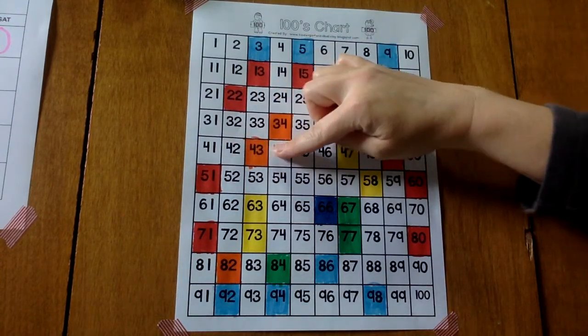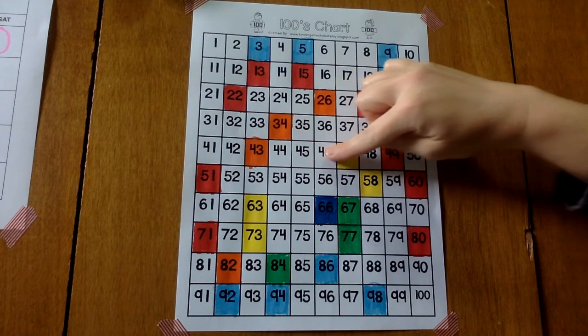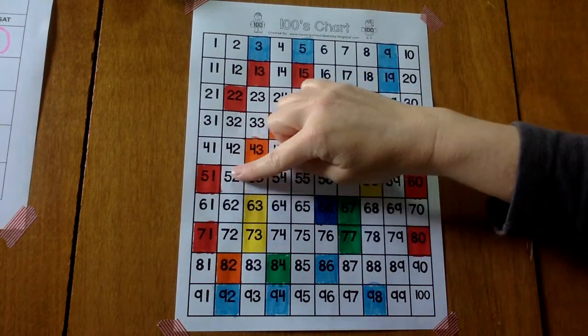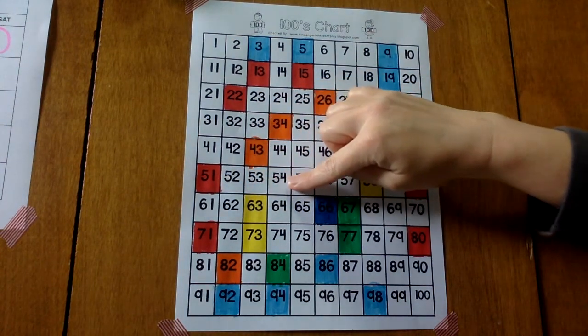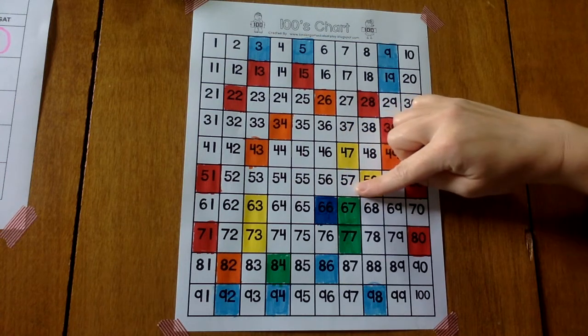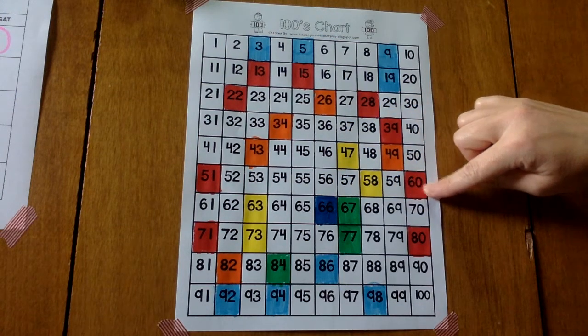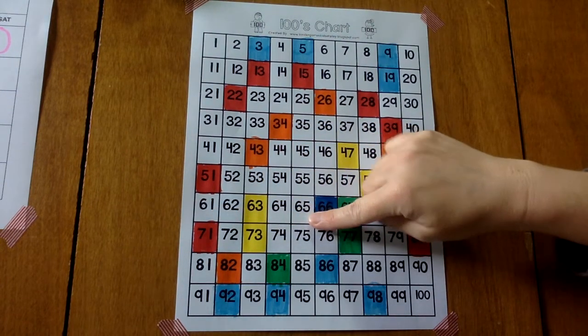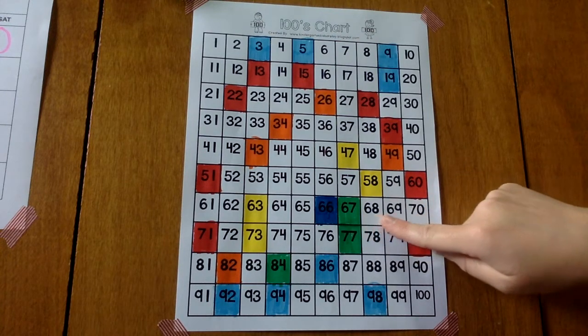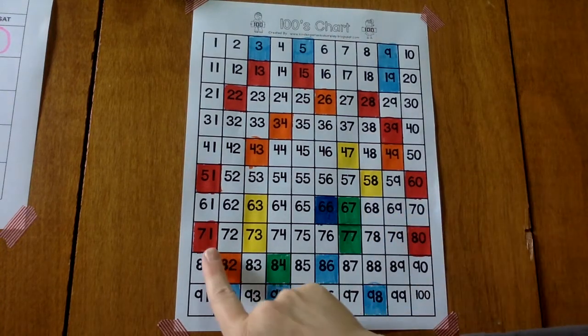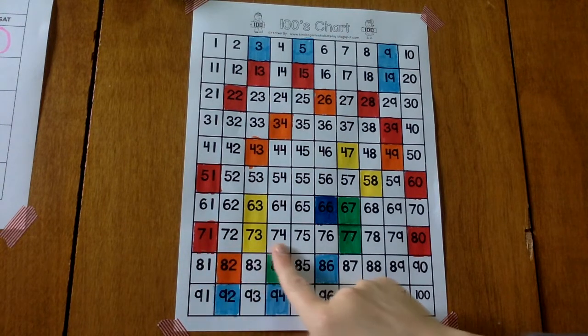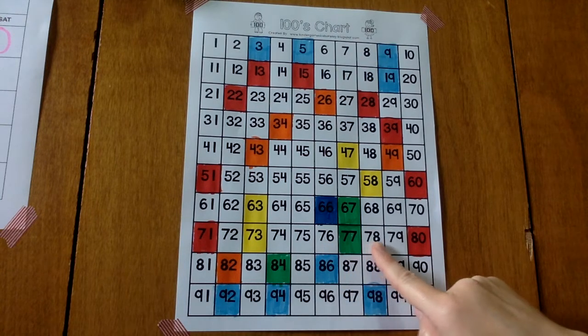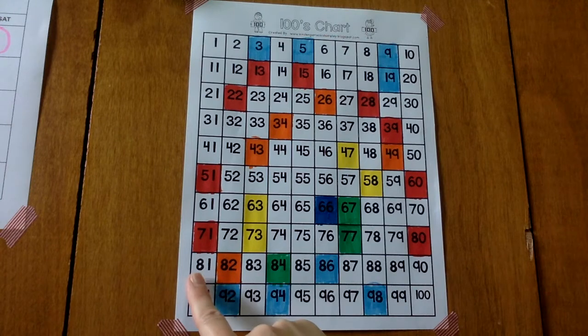41, 42, 43, 44, 45, 46, 47, 48, 49, 50, 51, 52, 53, 54, 55, 56, 57, 58, 59, 60, 61, 62, 63, 64, 65, 66, 67, 68, 69, 70, 71, 72, 73, 74, 75, 76, 77, 78, 79, 80.